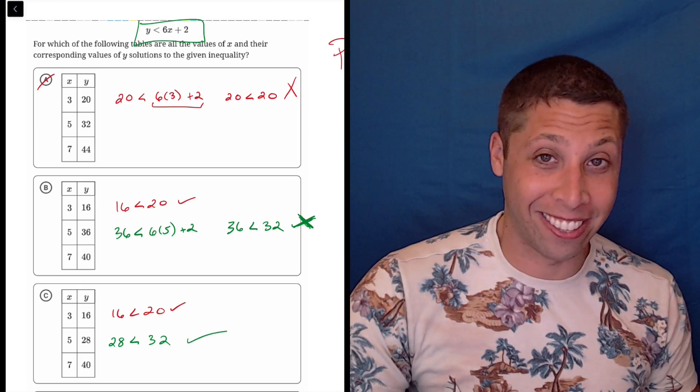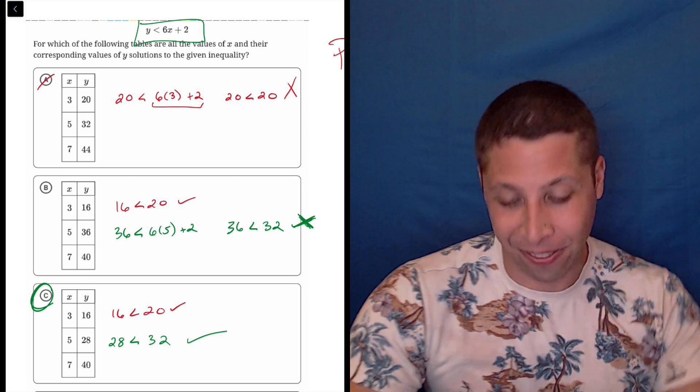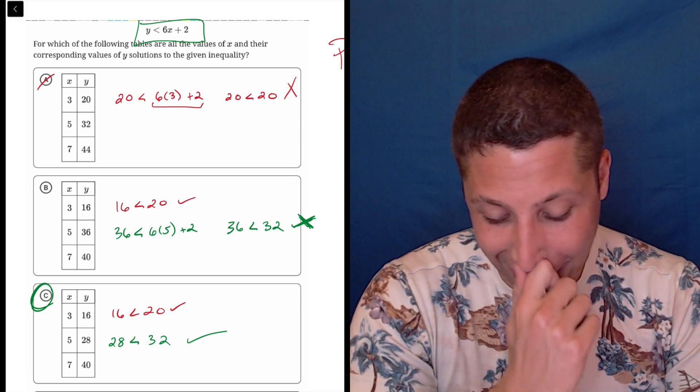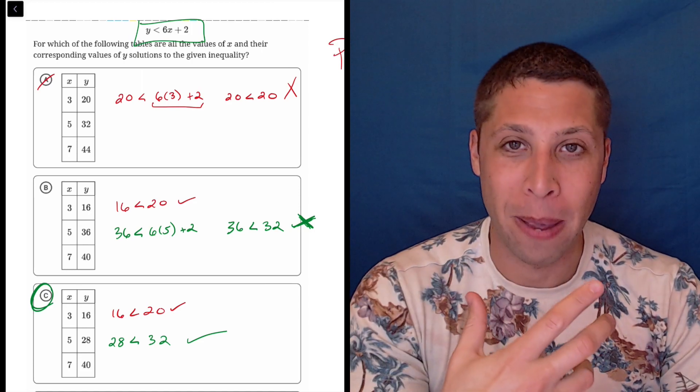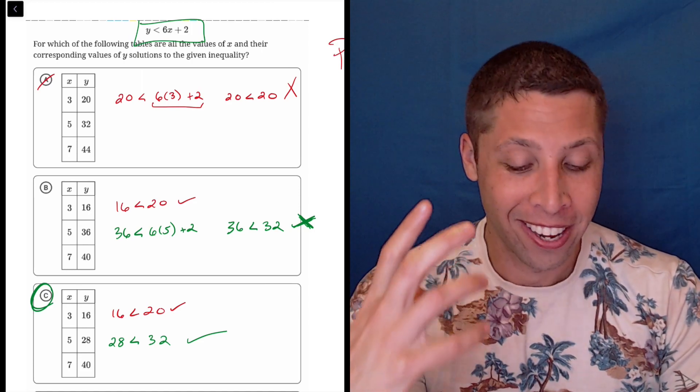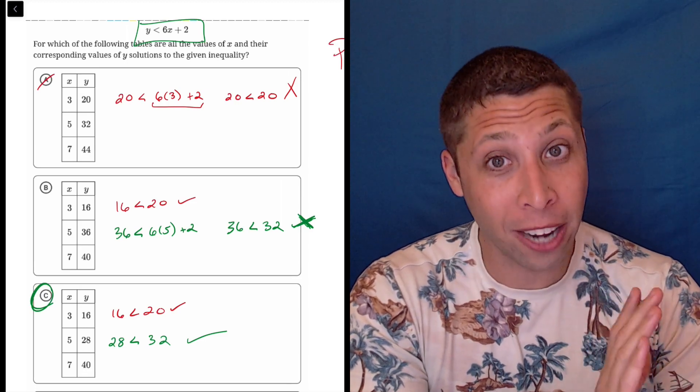But 28 is less than 32, so C is the answer. I'm glad I almost made that mistake there. It just goes to show why you want to write things on your scrap paper. When you're taking this test, especially the math section which is the second section, you're going to be tired and stressed.